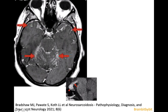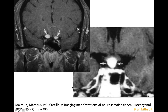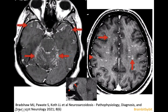Because there's involvement of the basal leptomeninges, you can also see thickening of the pituitary stalk and of the optic nerve, which might be mistaken for meningioma. The basal leptomeningeal enhancement can extend along the perivascular spaces, giving this very typical pattern at the level of the centrum semiovale.